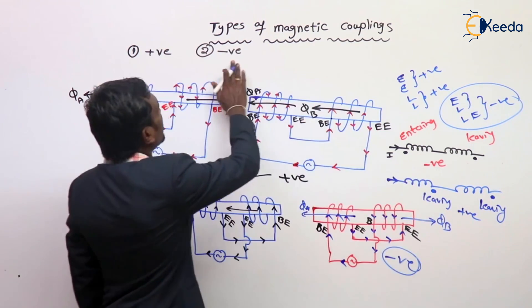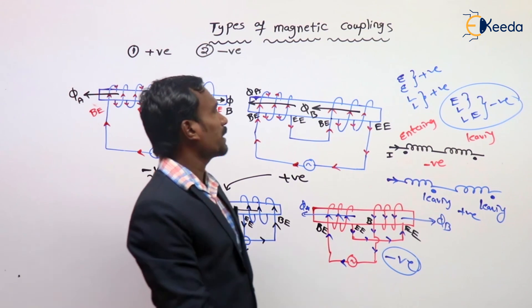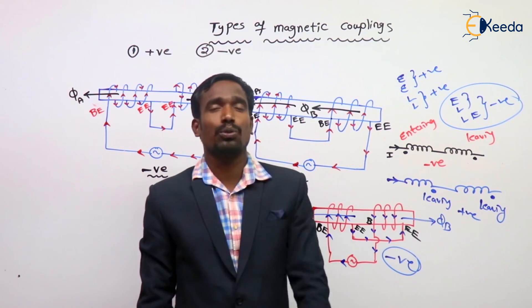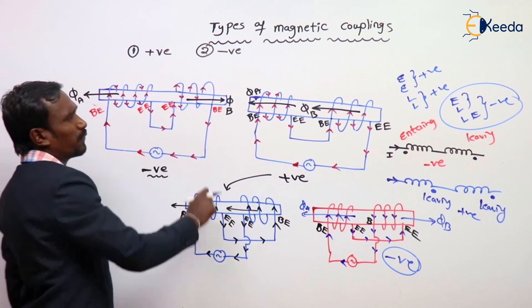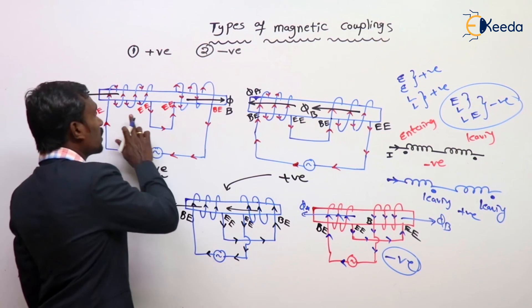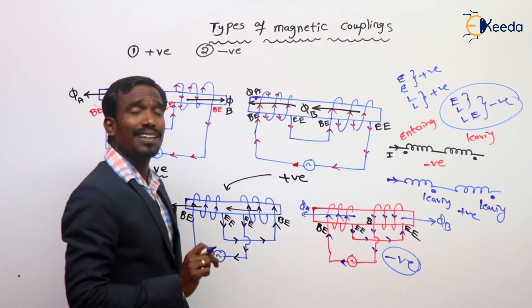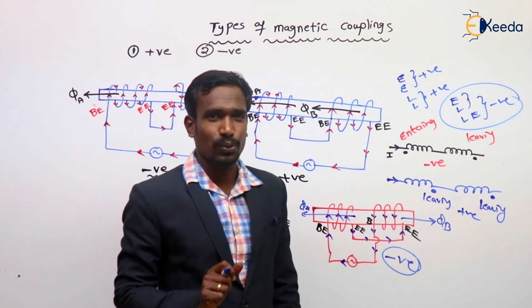This is the types of magnetic couplings. Generally they may not ask you in competitive exams, but if they ask you, now you know how to answer. Very simple — this is based on flux and based on dot notations. Generally the dot notations are based on sense of winding, not based on current. Thank you.